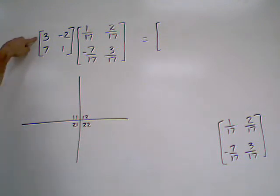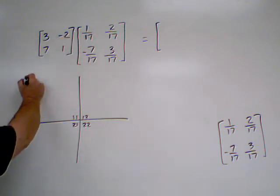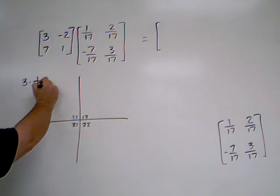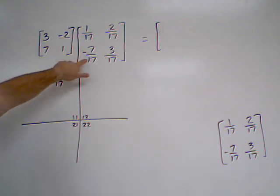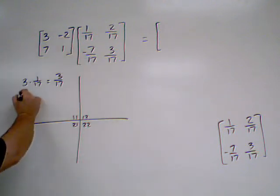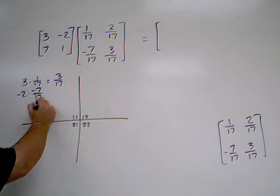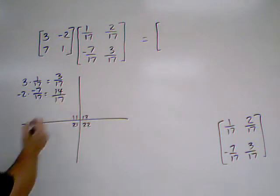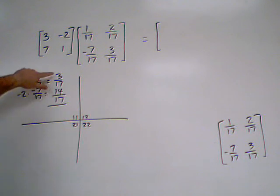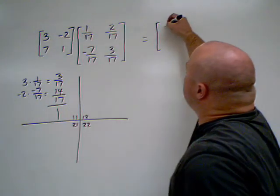First, we'll take row 1 from matrix A and column 1 of our inverse. So, 3 times 1 over 17 gives us 3 seventeenths. Negative 2 times negative 7 over 17 is going to give us a positive 14 over 17. Now, we add these together, and we have 14 plus 3, which is 17, over 17, which gives us 1. So, we put that in our product matrix.